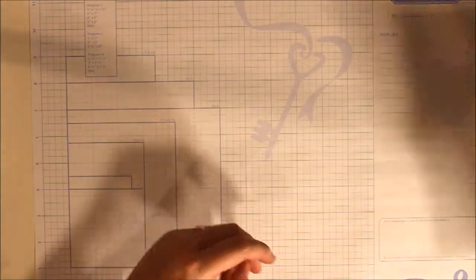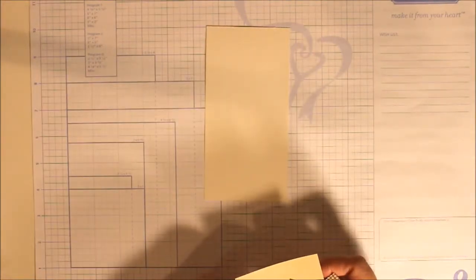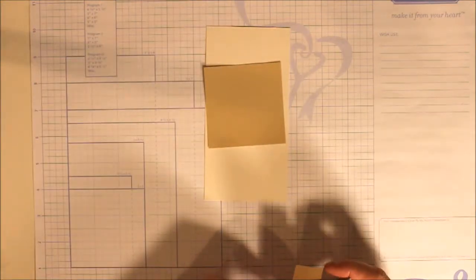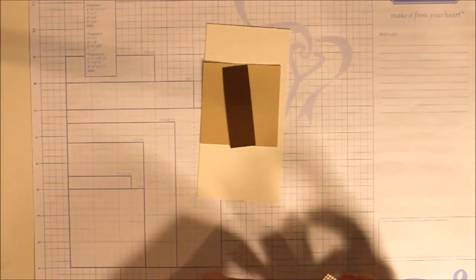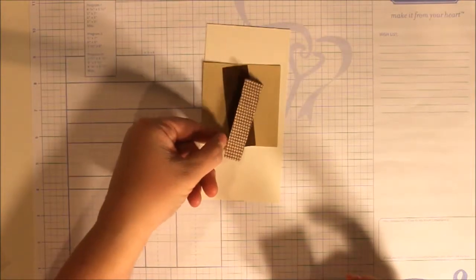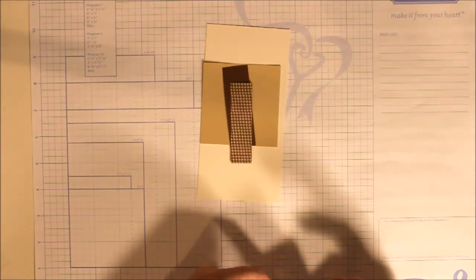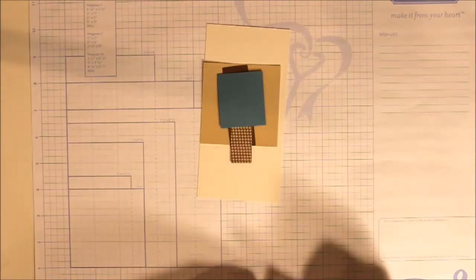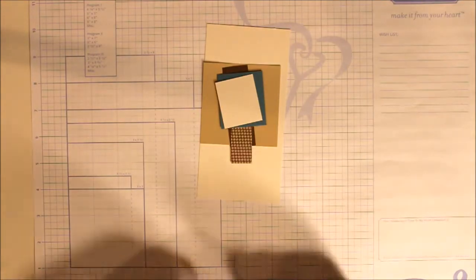You're going to start with a three and a quarter by six and a half piece of colonial white paper, a three by three piece of bamboo paper, a one by three piece of chocolate paper, a three quarter inch by three inch piece of the houndstooth from the Timberline paper pack, a two by one point seven five inch of the twilight, and finally a one point seven five by one point five inch piece of the colonial white.